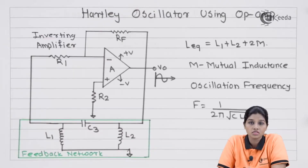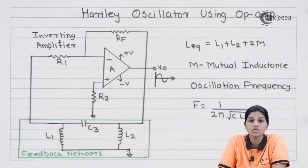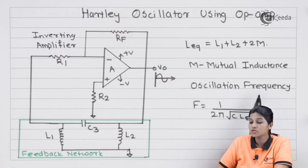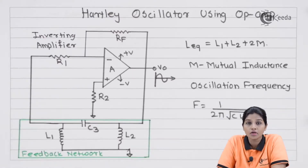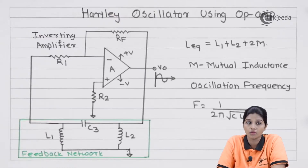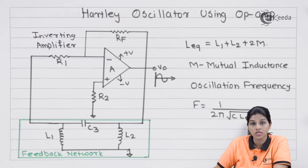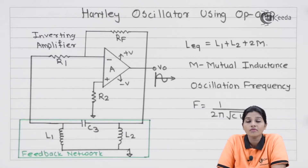The value of L equivalent is given by: L_eq = L1 + L2 + 2M, where M is the mutual inductance. The frequency of oscillation depends upon the values of inductor and capacitor, and while considering the value of inductance we always need to consider mutual inductance. The frequency of oscillation is given by: f = 1 / (2π √(L_eq × C)).